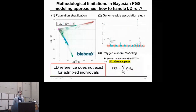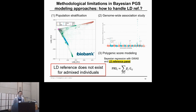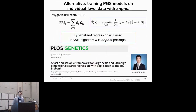Why is it difficult to include admixed individuals in polygenic score modeling? Going back to the Bayesian paradigm, population stratification steps often exclude many admixed individuals. Then when fitting the Bayesian regression model, it takes GWAS summary statistics and an LD reference panel as input — and we don't know how to properly represent the LD reference panel for admixed individuals. So there is a methodological limitation in how to model polygenic scores for those individuals.